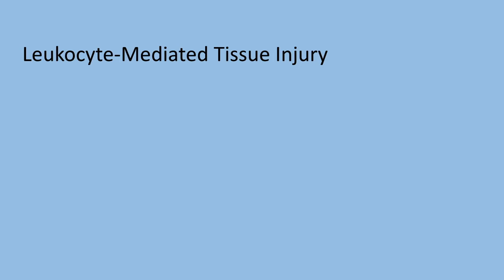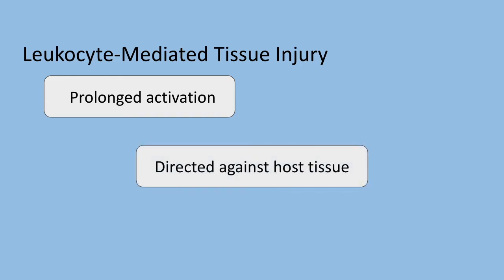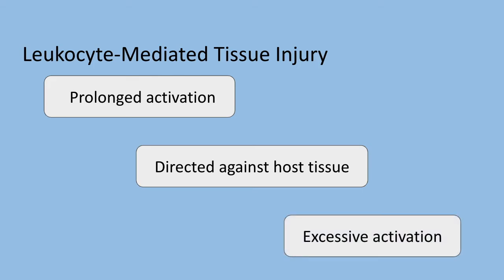Now leukocytes can damage normal cells under certain circumstances. If there is prolonged activation as part of a normal defensive reaction, sometimes infections are difficult to eradicate and the inflammatory reaction from your own immune cells can cause more damage than the microbe itself. If the inflammatory response is inappropriately directed against host tissues, such as in certain autoimmune diseases, this can be problematic. And if the immune system reacts excessively against normally harmless environmental substances, like in allergic diseases, this can cause a bunch of host damage as well.